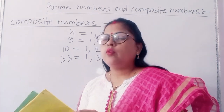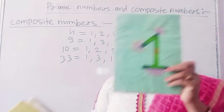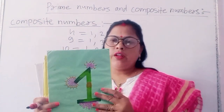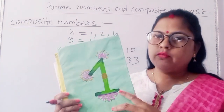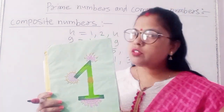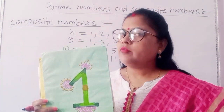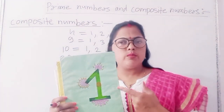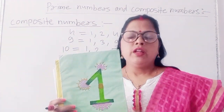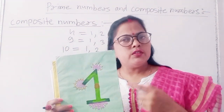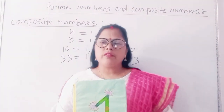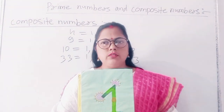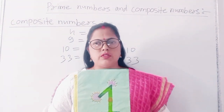Next, the number 1. Is 1 composite or prime? This is a unique number. It is neither a composite number nor a prime number. One is a unique number. I hope you have cleared all the doubts. Meet you in the next video. Thanks for watching.